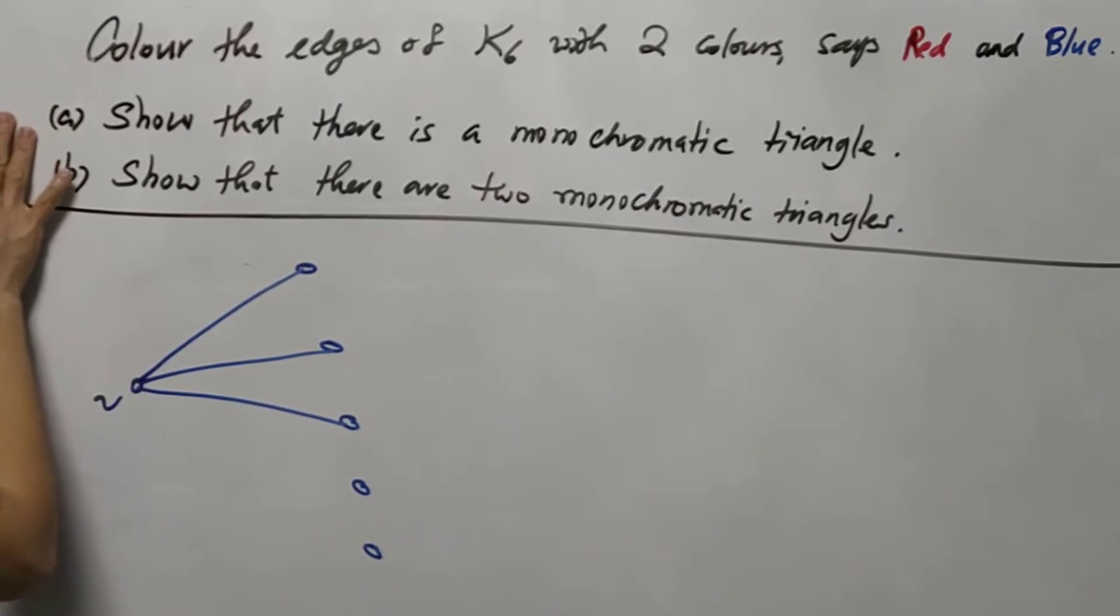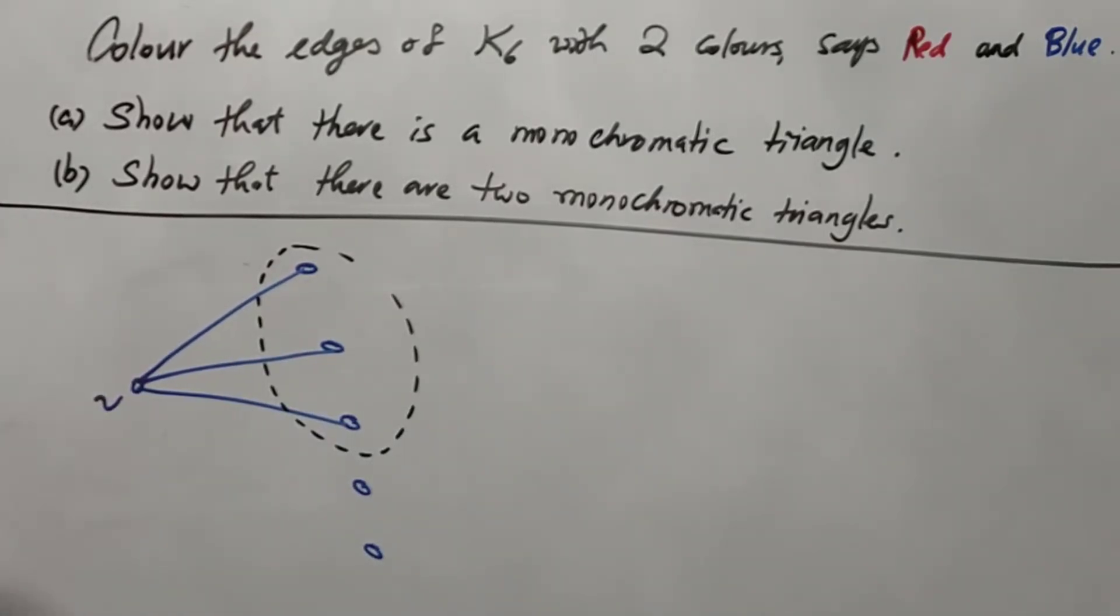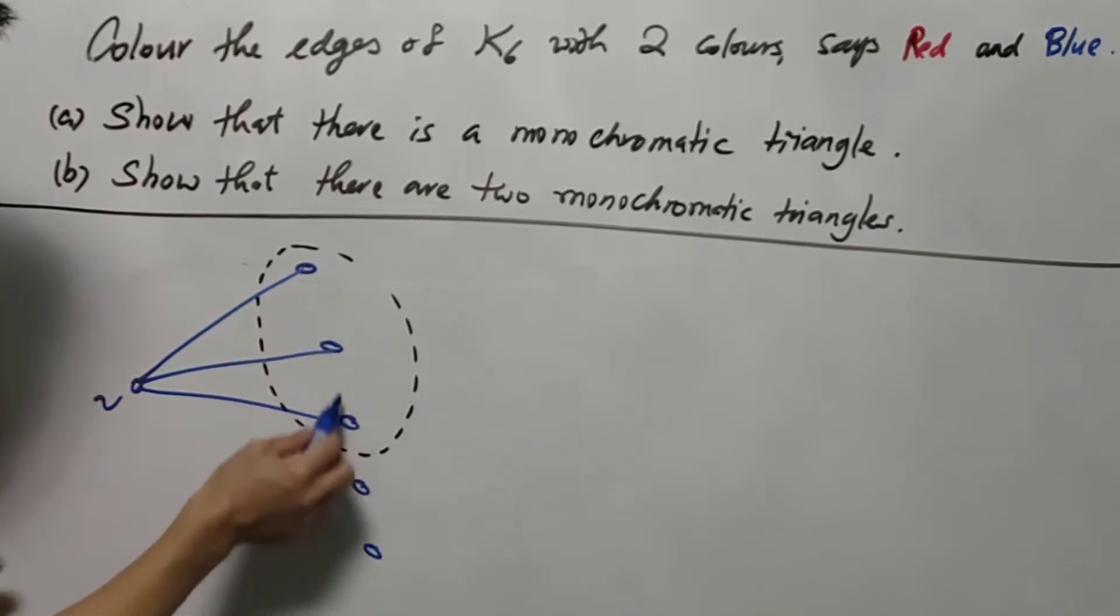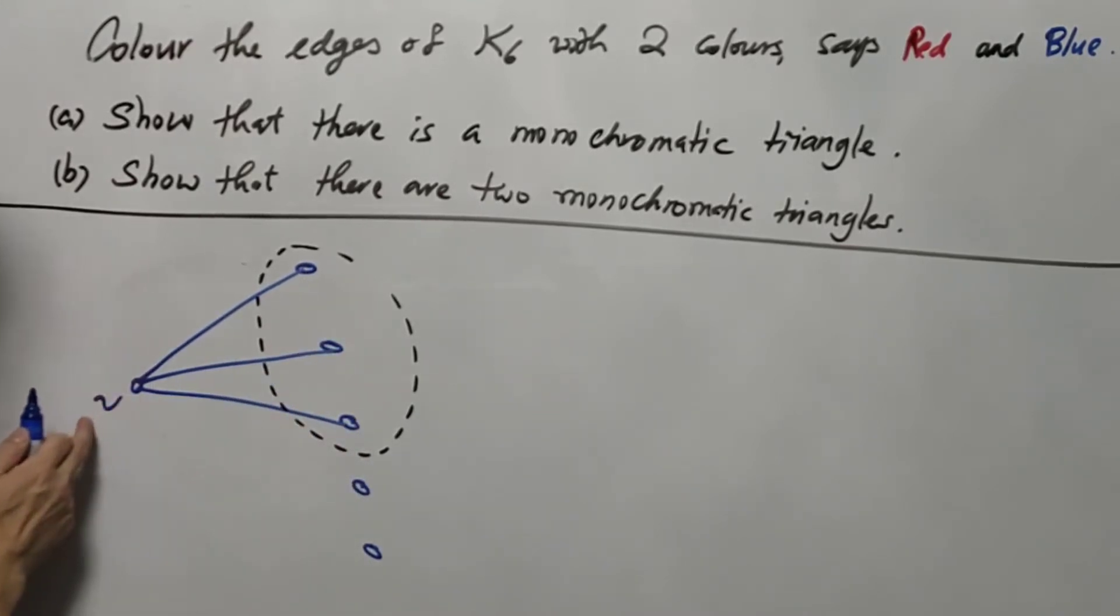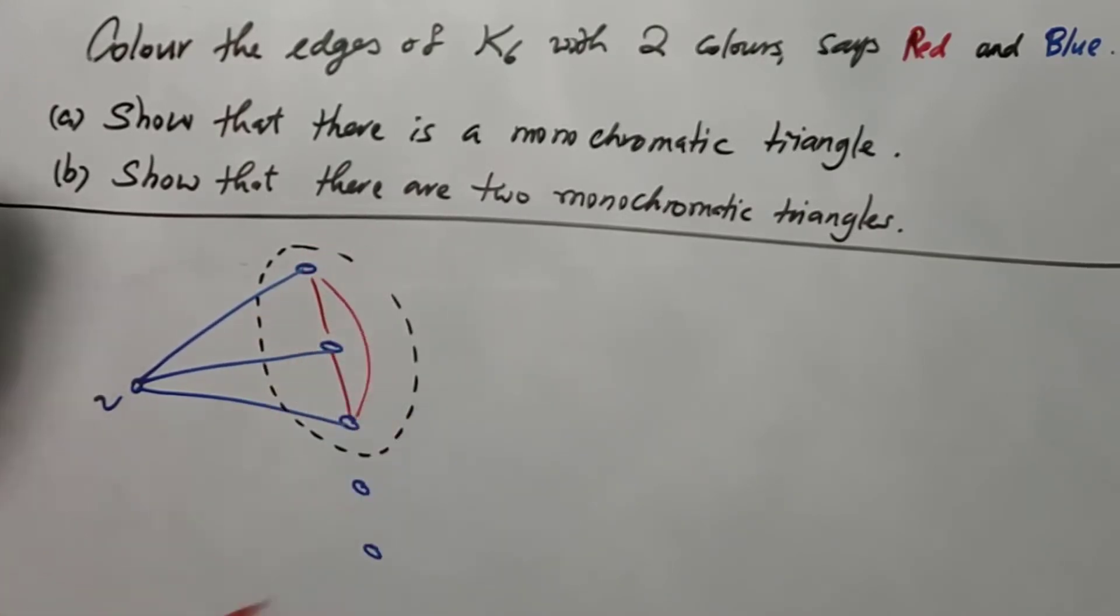Suppose the statement is not true, we try to avoid a monochromatic triangle. Now let's consider these three vertices. As we want to avoid a monochromatic triangle, we cannot use blue color to join any two vertices here. Otherwise, together with V, they will form a monochromatic triangle. And therefore, we're forced to use all red color among these three vertices. And in that case, we will have a red triangle. And this done question A.